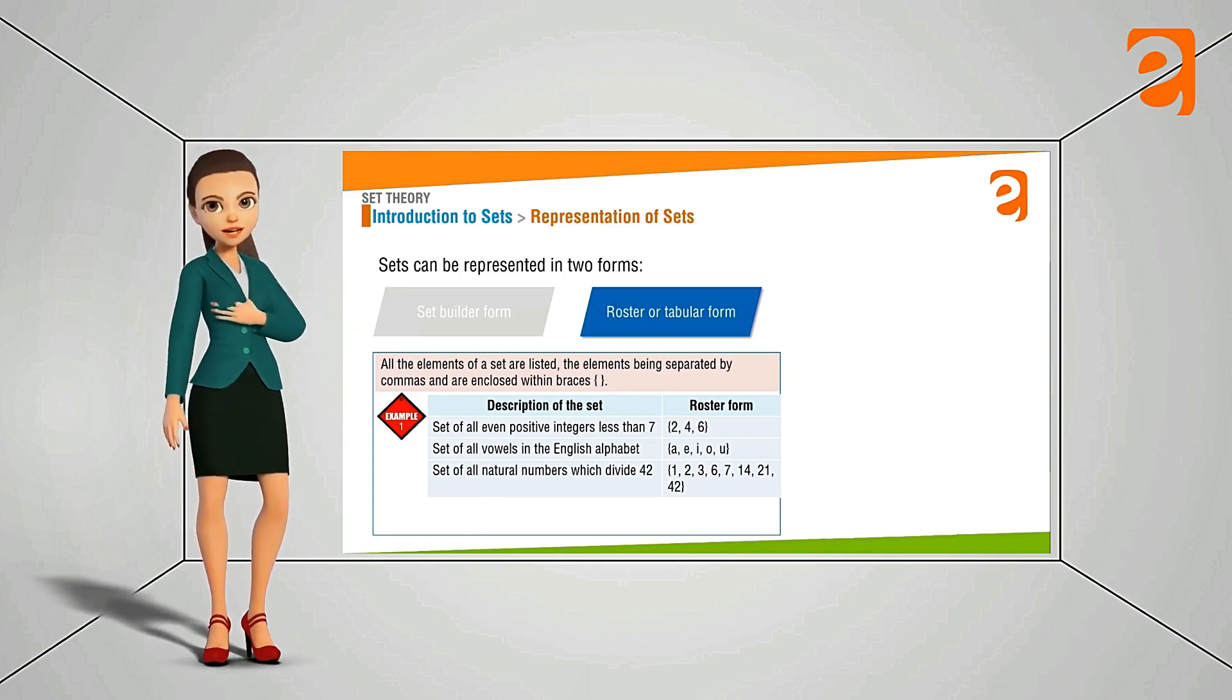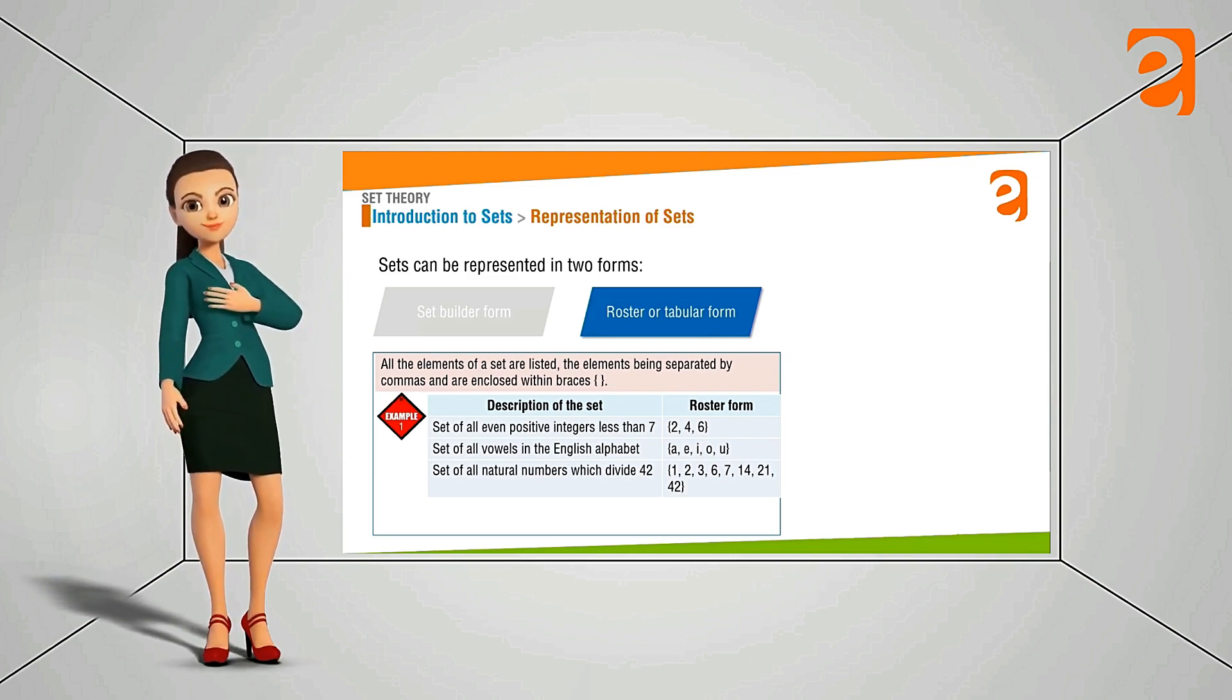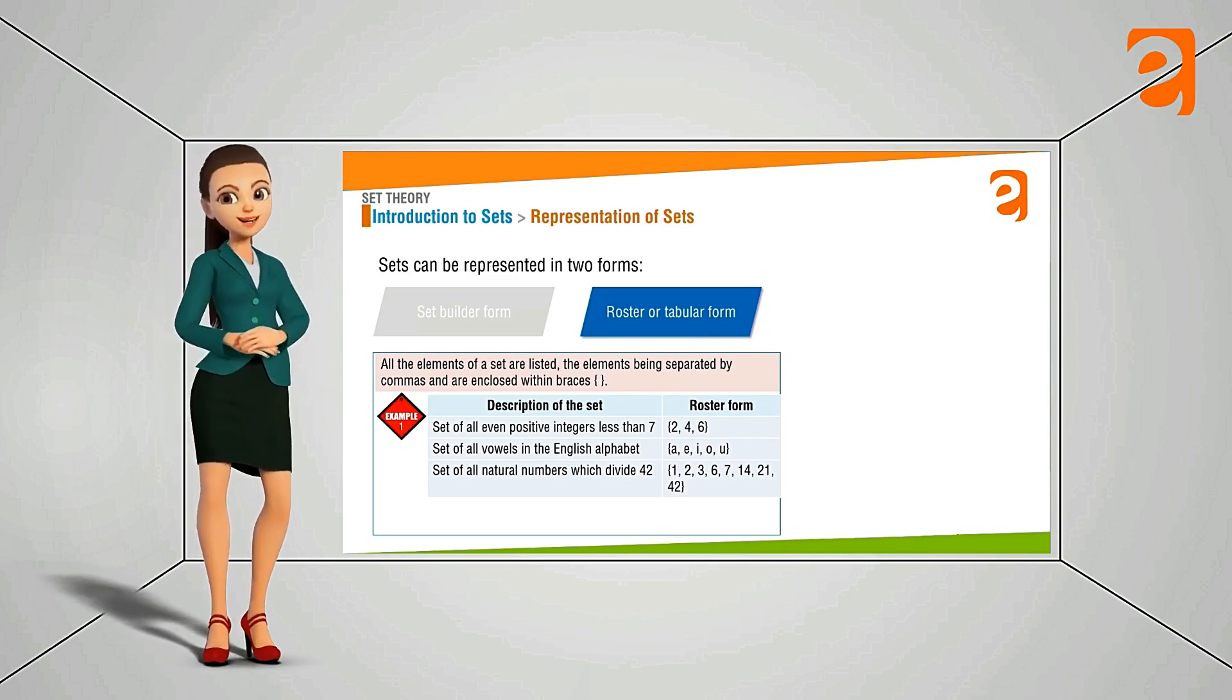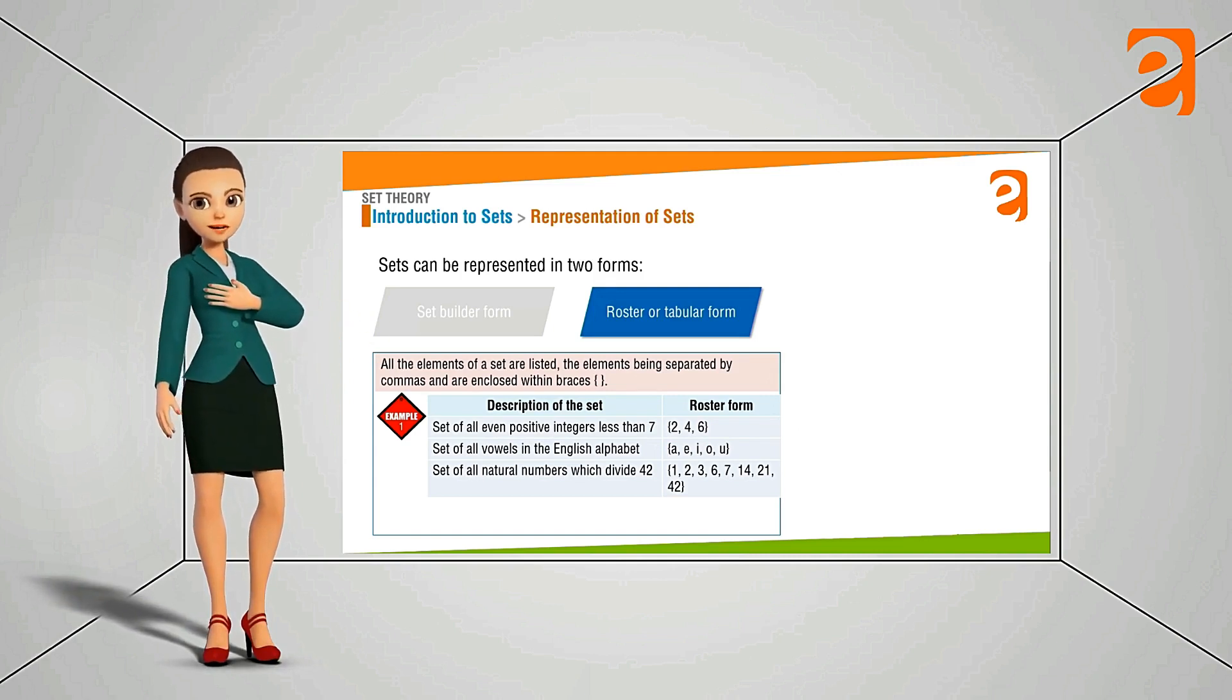Set of all natural numbers which is divisible by 42. If you will find all the divisors of 42 it is 1, 2, 3, 6, 7, 14 and 21 and the number 42 itself. You can check it yourself. So we are putting all these divisors of 42 in one curly bracket separated by a comma. This is the roster form.